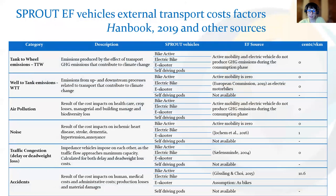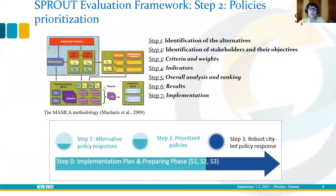Something worth mentioning before step two is that the handbook doesn't cover some default values for new vehicles, so we have to conduct desktop research. The input for step two will be the list of policy responses identified in the preliminary step, and the objective is to categorize and prioritize the ones most relevant for all stakeholders participating in the pilot.